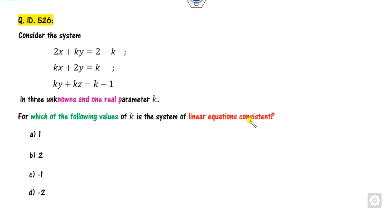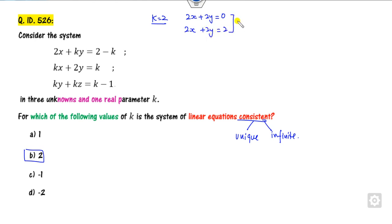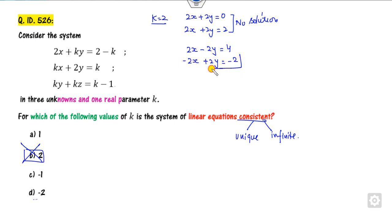Next question: find the values of k for which the system is consistent. Consistent means either a unique solution or infinitely many solutions. Substituting k=2: the equations become 2x+2y=0 and 2x+2y=2, which is impossible — no solution, inconsistent. This option is cancelled. For k=-2: equations become 2x-2y=4 and 2x-2y=2, again a contradiction — no solution. This option is also cancelled.